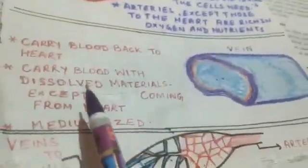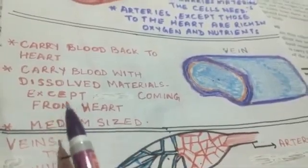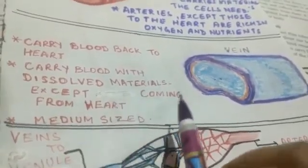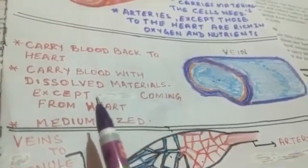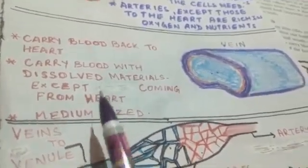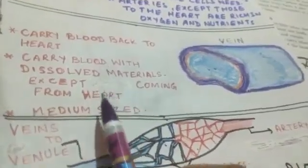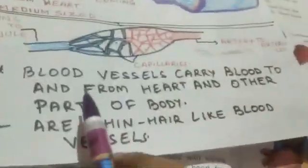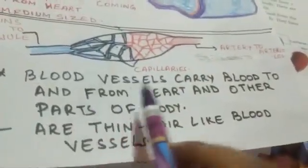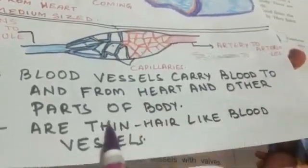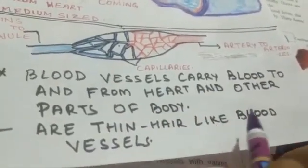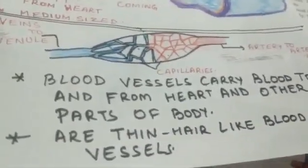Veins carry blood back to the heart along with dissolved materials, except the pulmonary vein which comes from the lungs to the heart. Veins bring impure blood from the body to the heart and are also medium-sized vessels.